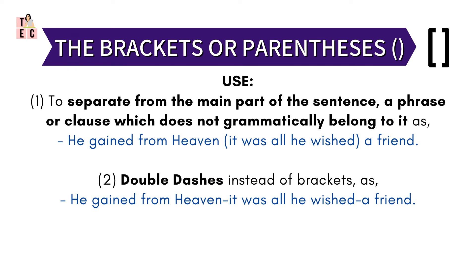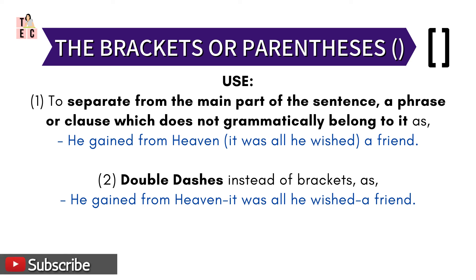Now, the brackets or parentheses. This refers to separating from the main part of a sentence a phrase or clause which does not grammatically belong to it. For example: 'He gained from heaven (it was all he wished) a friend.' The sentence can be said simply as 'He gained from heaven, a friend,' but to add more meaning, 'it was all he wished' is placed in brackets. Alternatively, double dashes can be used instead of brackets: 'He gained from heaven — it was all he wished — a friend.'